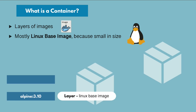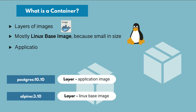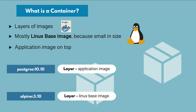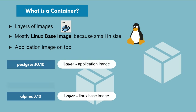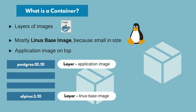On top of the base image you would have the application image. Usually there are intermediate images that lead up to the actual application image that runs in the container, and on top of that you have all the configuration data. Now it's time to dive into a practical example of how you can actually use a Docker container — how it looks when you download and run it on your local machine.